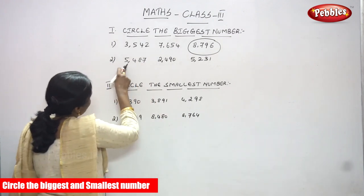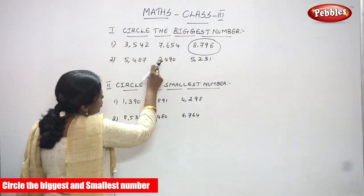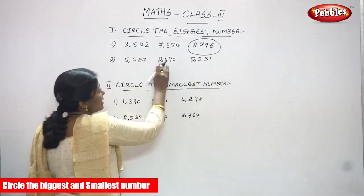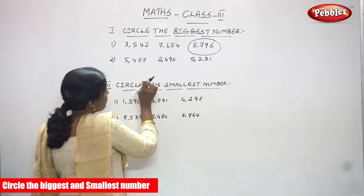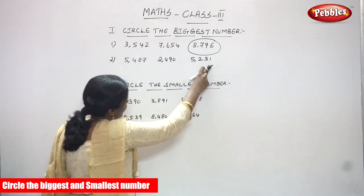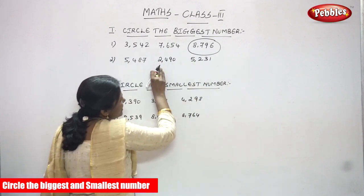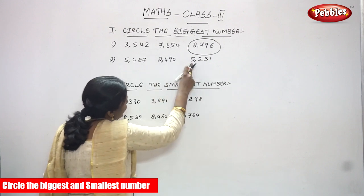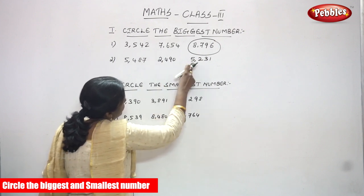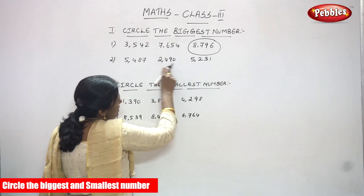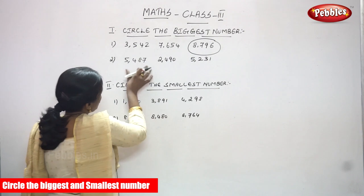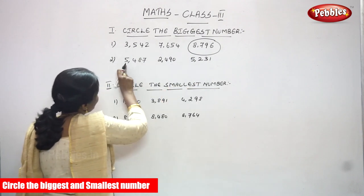What is the number in the thousands place? The first number 5487 has 5, so 5000. The second number 2490 has 2, so 2000. The third number 5231 has 5, so 5000. Since 2490 starts with 2000 compared to the other two which start with 5000, it is the least. So remove 2490 from the list and compare only the remaining two numbers.